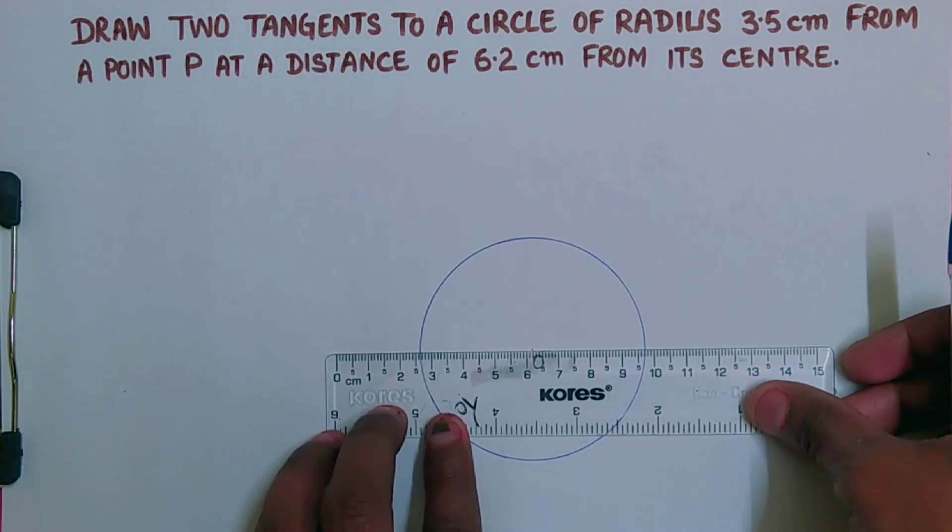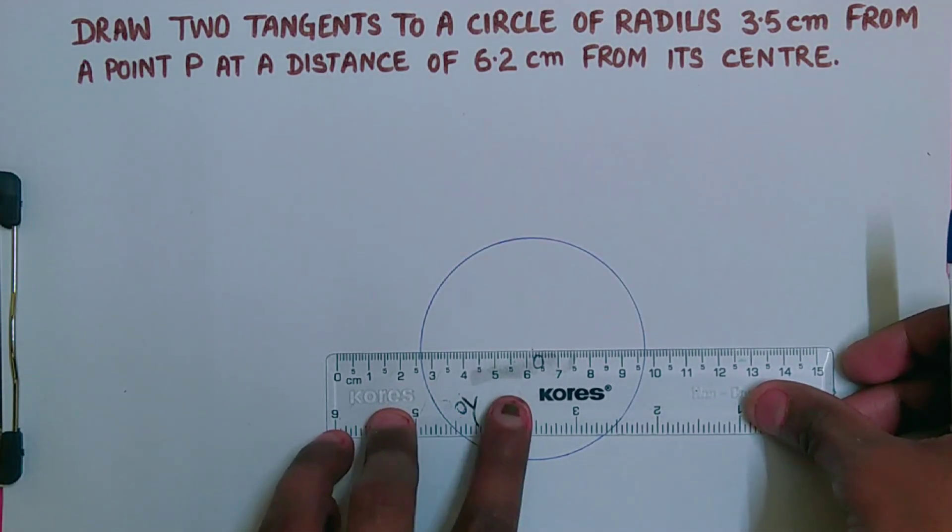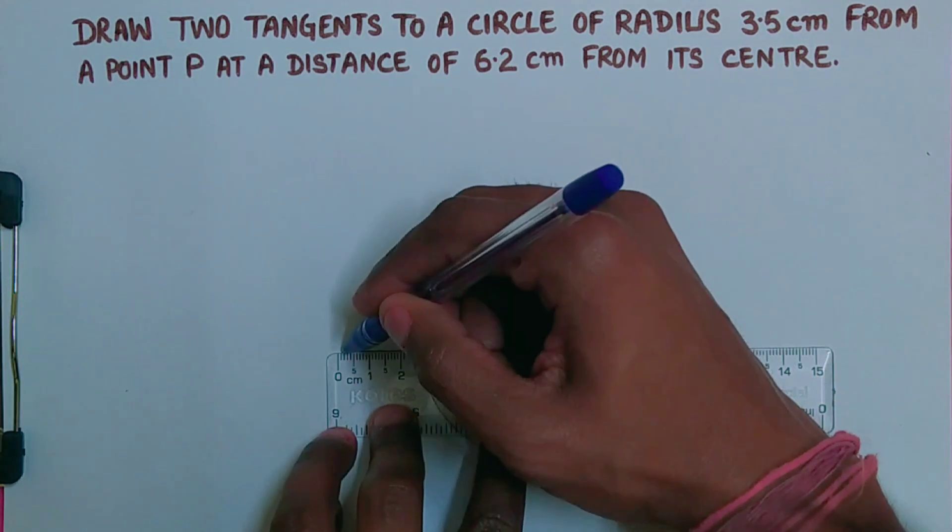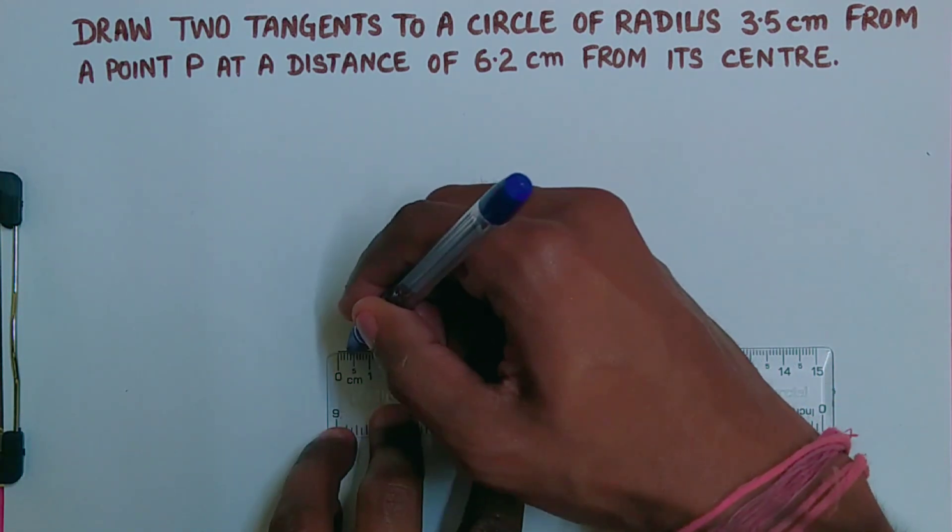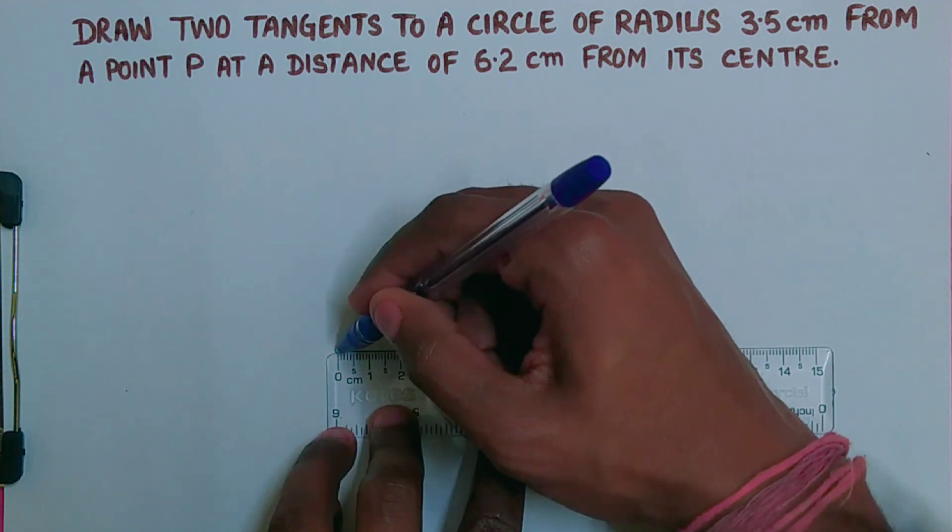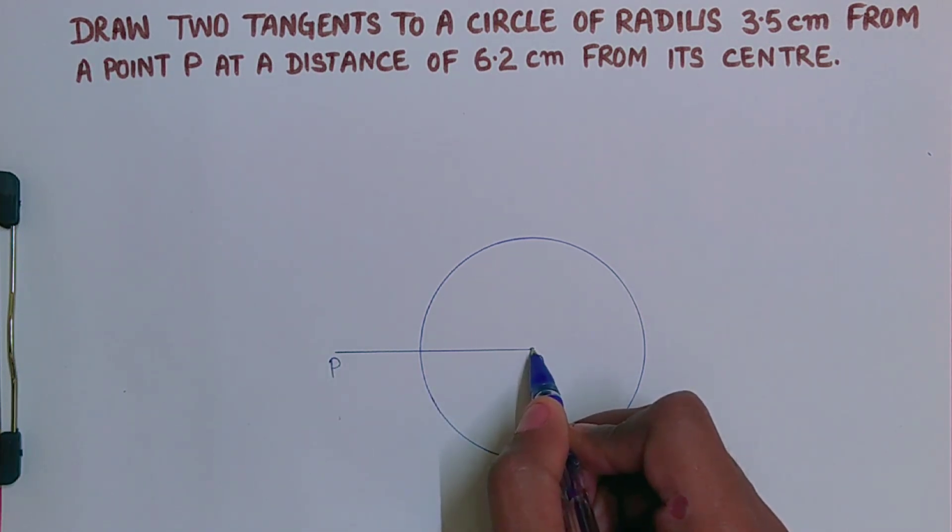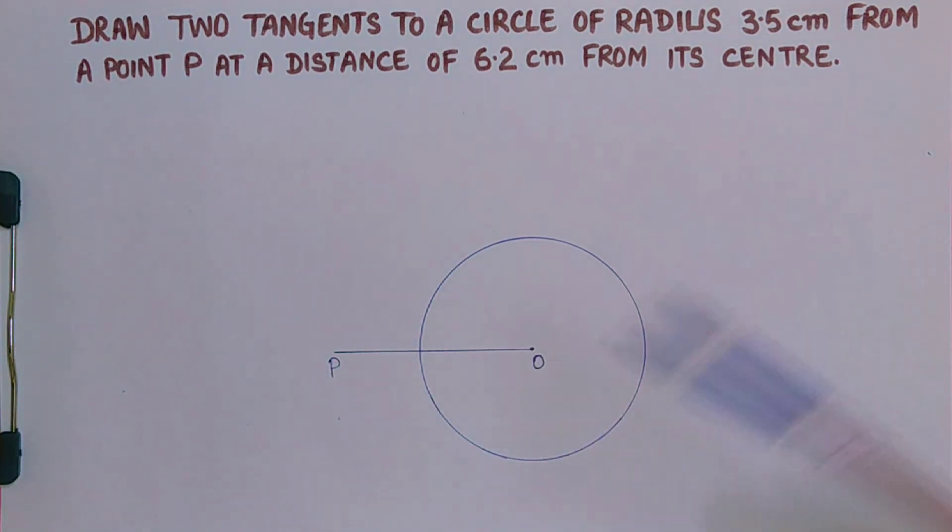This one is 6.2, I am taking on left hand side, this point P. So now this point P is at a distance of 6.2 centimeter from the center O.